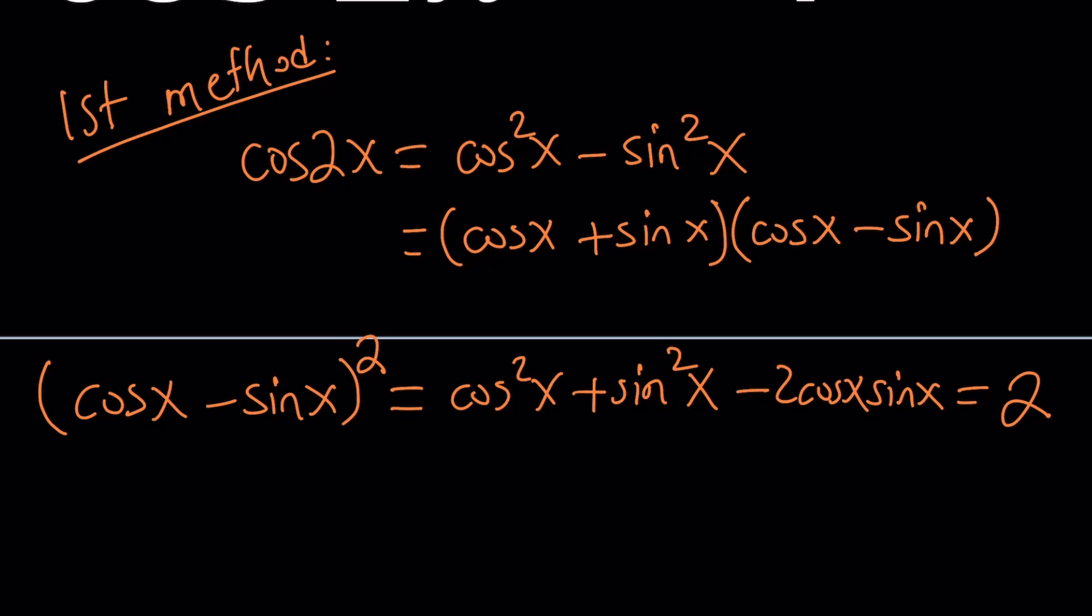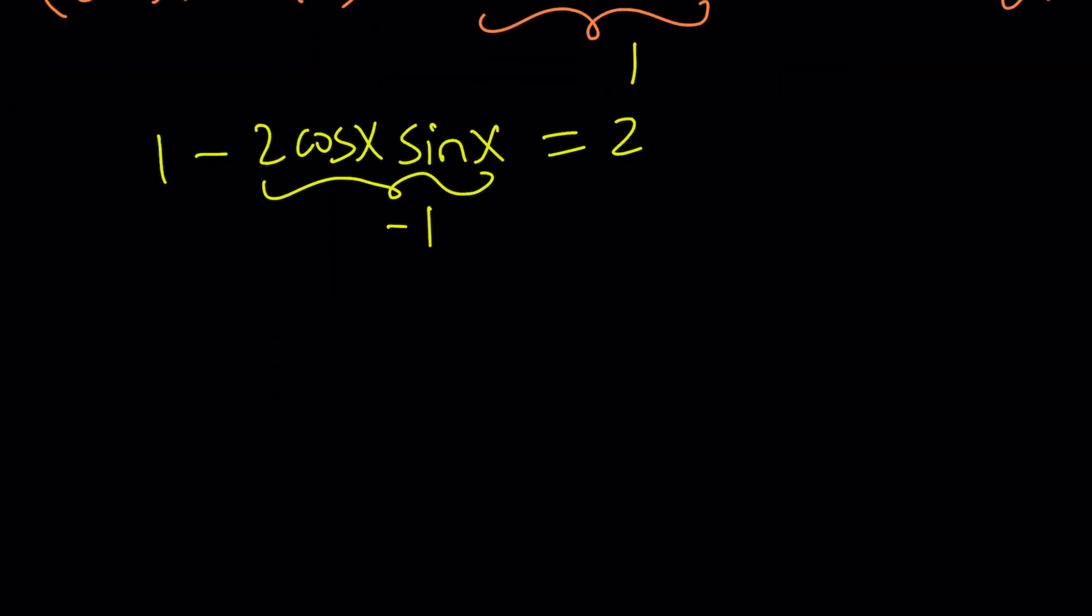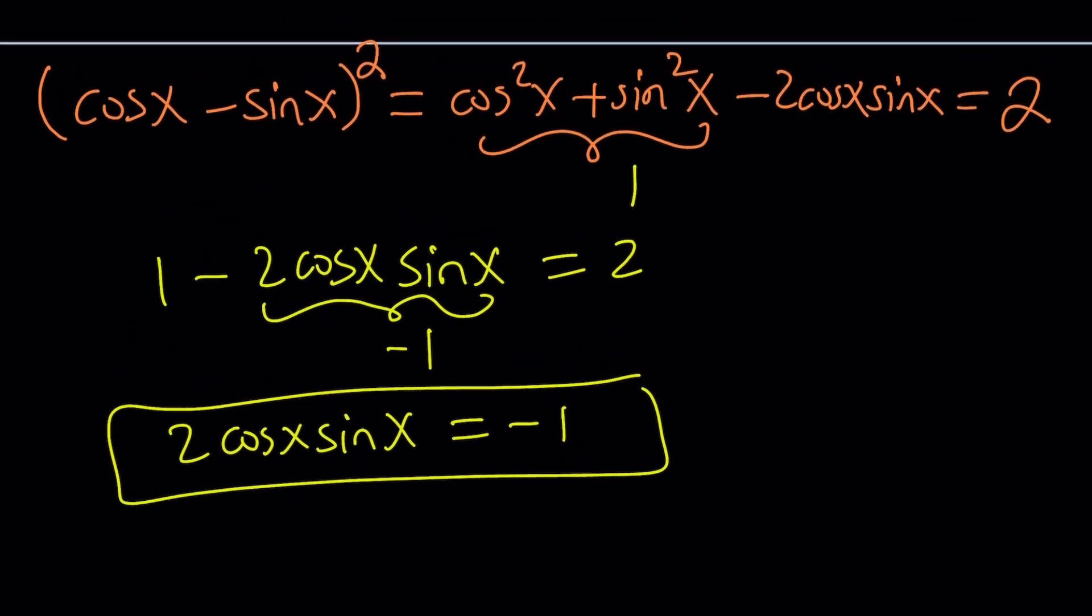Now what is that supposed to mean? This means a lot of good things. Think about it. Cosine squared plus sine squared is always 1. You should know this identity for sure, right? So I get the following: 1 minus 2 cosine x sine x is equal to 2. If I switch these around, I would just think of it this way: this is supposed to be negative 1, because 1 minus what number equals 2? The answer is negative 1. So 2 cosine x sine x must be negative 1. Let's write it as is. 2 cosine x sine x is equal to negative 1.